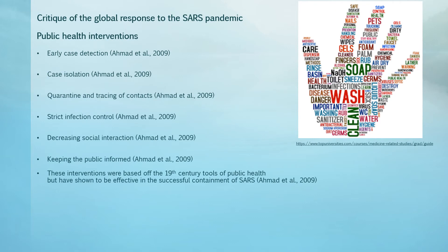As this new disease wasn't responding to antiviral treatments and there were no vaccines available, the best way to combat SARS was through traditional public health interventions. These were implemented by international organisations, national governments and public health authorities. The interventions involved early case detection, case isolation, tracing and quarantining of contacts, strict infection control, decreasing social interactions and keeping the public informed. Although these interventions are based on 19th century public health tools, they were successful in containing SARS.